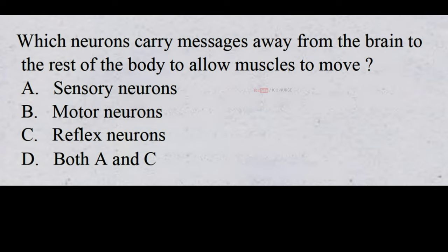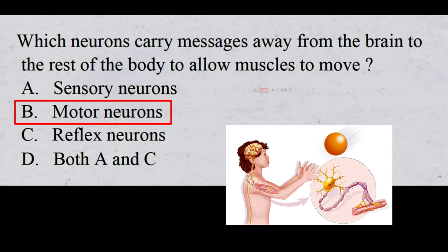Which neurons carry messages away from the brain to the rest of the body to allow muscles to move? A. Sensory neurons. B. Motor neurons. C. Reflex neurons. D. Both A and C. And the correct answer is B. Motor neurons.